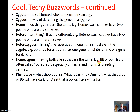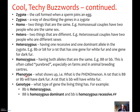Phenotype is what shows up — it comes from the word phenomenon. What is the phenomenon? What shows up? So if it's got capital B capital B, or capital B little b, it will have dark fur. Little b little b, it'll have white fur. The white fur and the black fur are the phenotype. The genotype is what type of gene the living thing has. If the two alleles are different, they're heterozygous. If both are dominant — homozygous dominant, both the same dominant message. Little b little b — homozygous recessive.